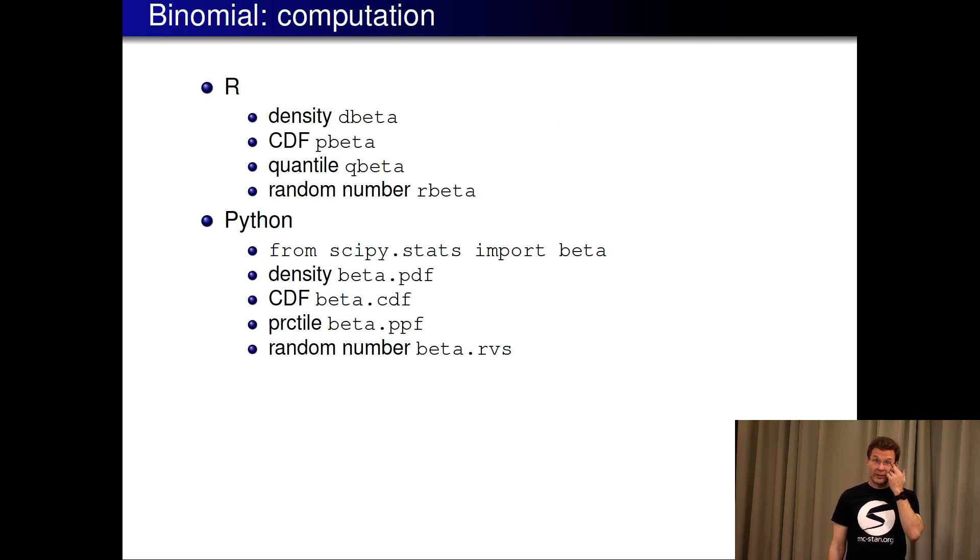Here are functions from R and Python you can use. One of your exercises is to plot these beta distributions, and then later in the exercises you also need to use these functions or other functions to plot these posterior distributions in R or Python.